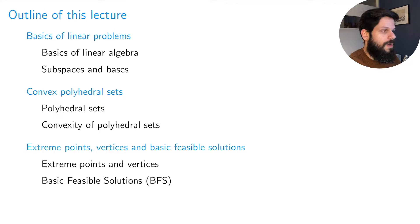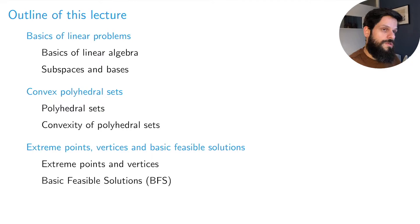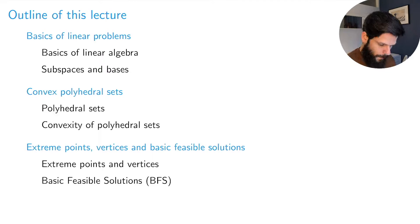The outline has three parts. First, we'll cover some basics of linear algebra that we'll use throughout the course. Then we'll talk about convex polyhedral sets, which are the nature of the feasibility sets generated by our constraints in linear programs. Finally, we'll define the important terms central to the simplex method: extreme points, vertices, and basic feasible solutions.